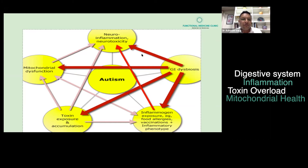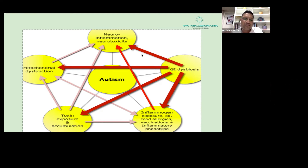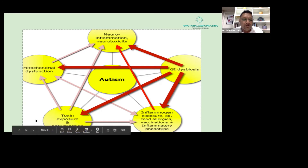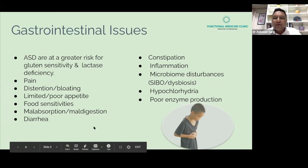If you fix the digestive system, address inflammation and toxin overload, and improve mitochondrial health, inflammation will come down and symptoms will improve. It's not just symptomatic treatment — it's about treating the root cause. As a consequence, autism, ASD, and other disabilities can be solved. Parents are often told nothing can be done, but when you connect the dots and solve the root cause, you can solve the problem.